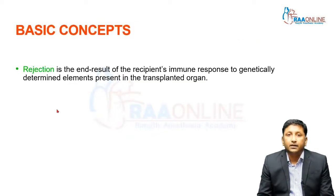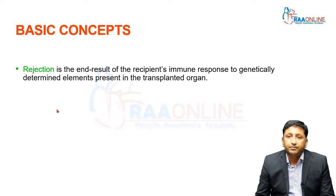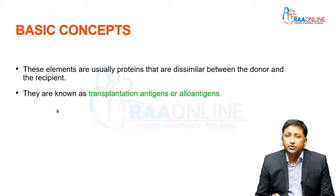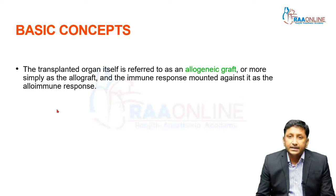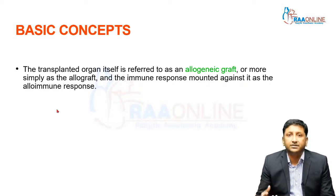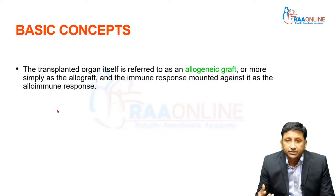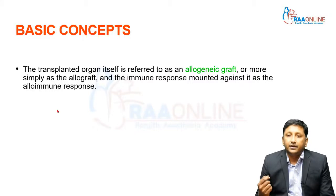The basic concept: rejection is the end result of the recipient's immune response to genetically determined elements present in the transplanted organ. These elements are usually proteins that are dissimilar between the donor and recipient, known as transplantation antigens or allo antigens — we always use the term allo antigens. The transplanted organ is referred to as an allogenic graft, or simply allograft. We always use the term 'graft' — whether there is hepatic artery thrombosis or renal artery thrombosis, the graft is not functioning. The immune response mounted against it is called an allo immune response.